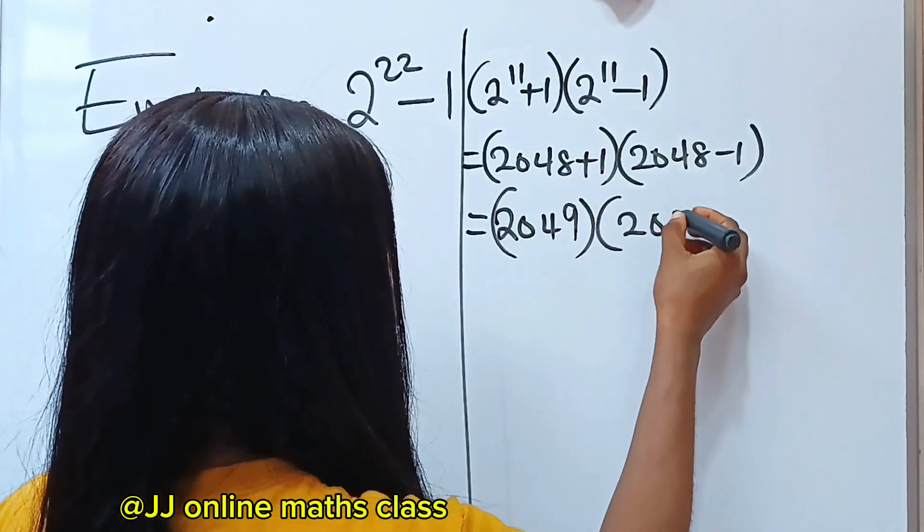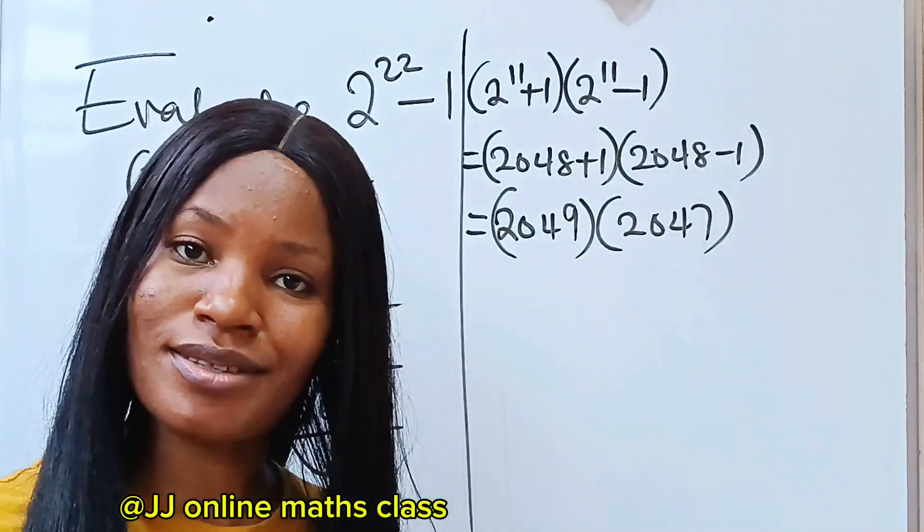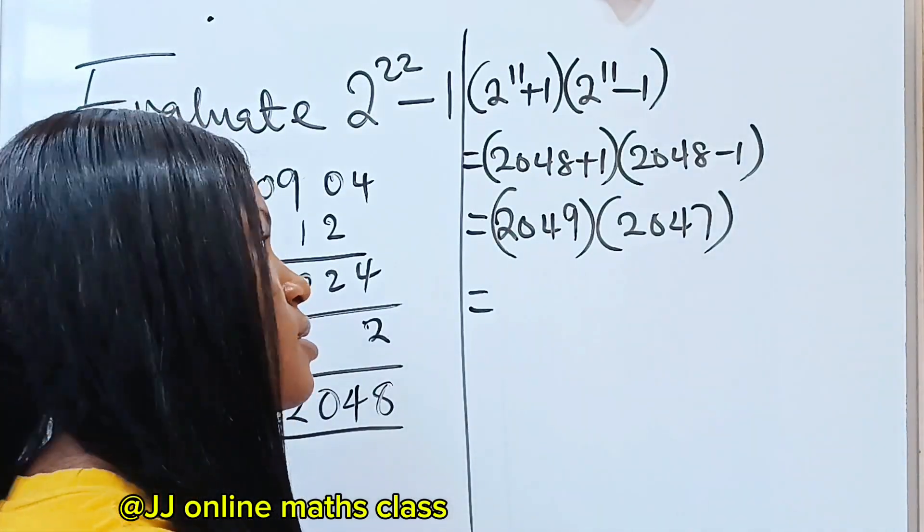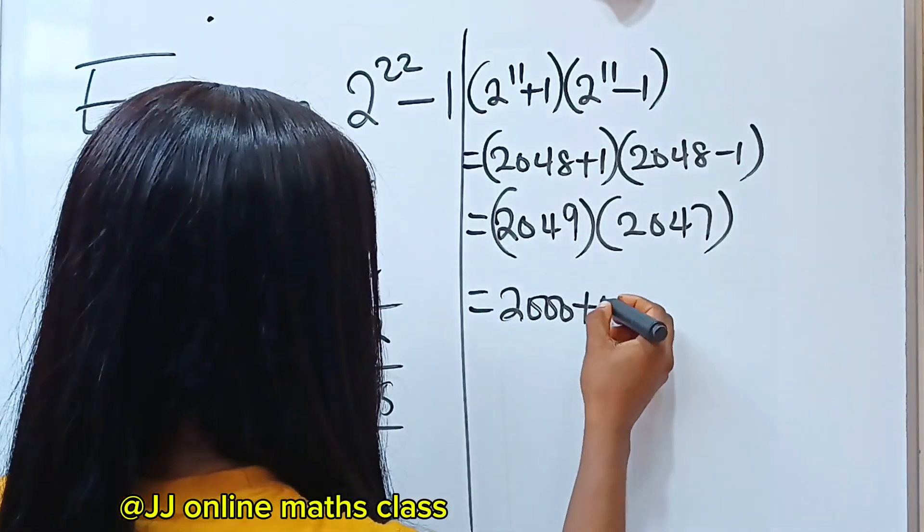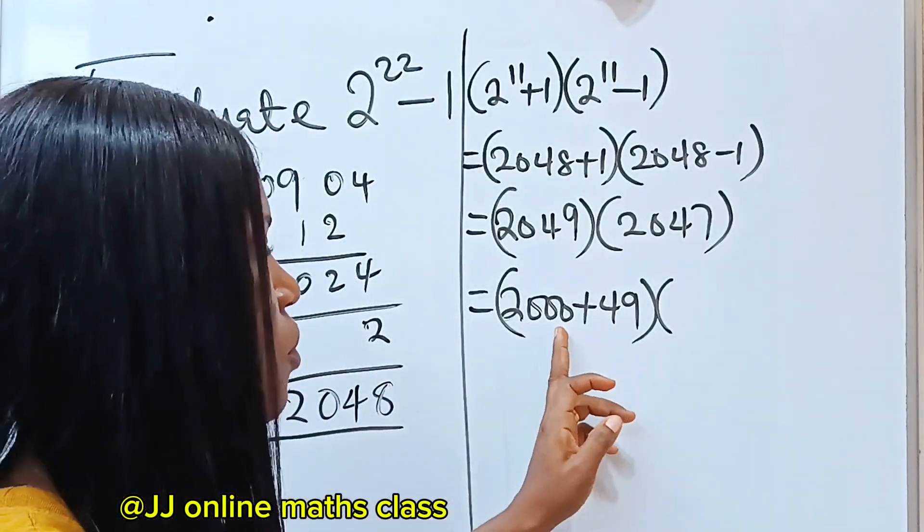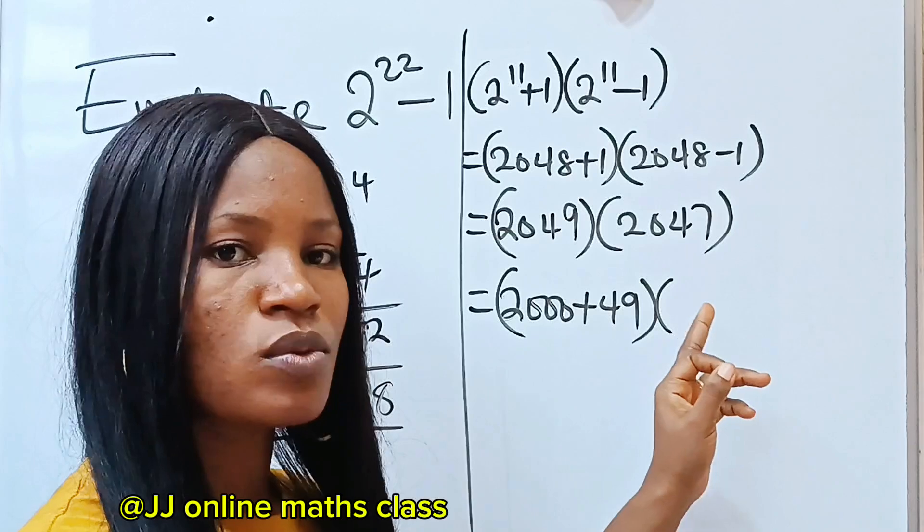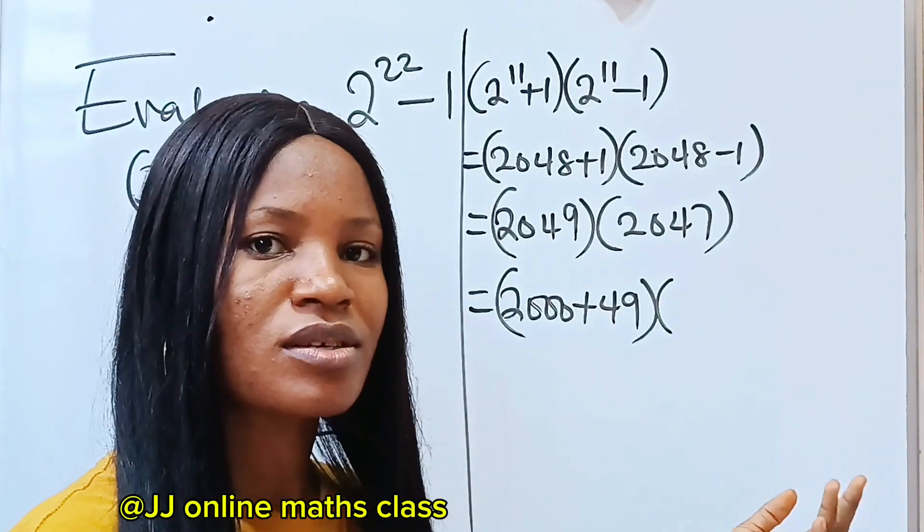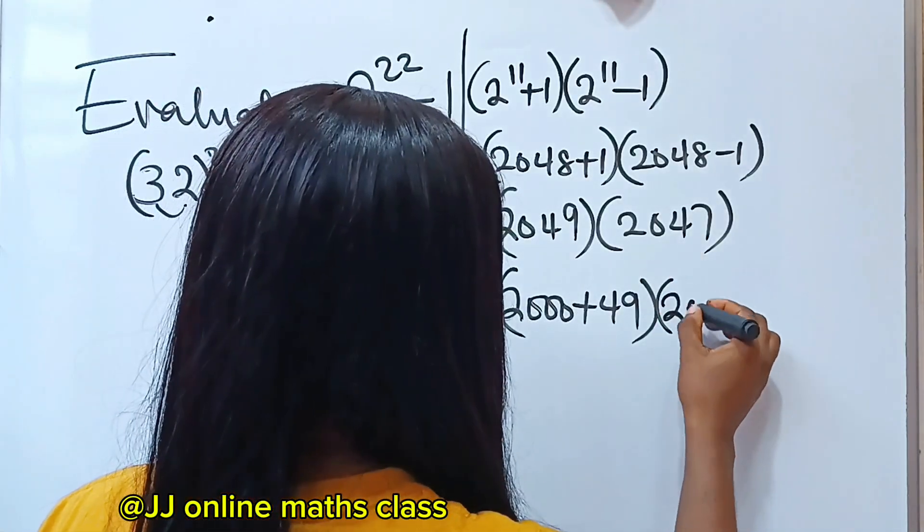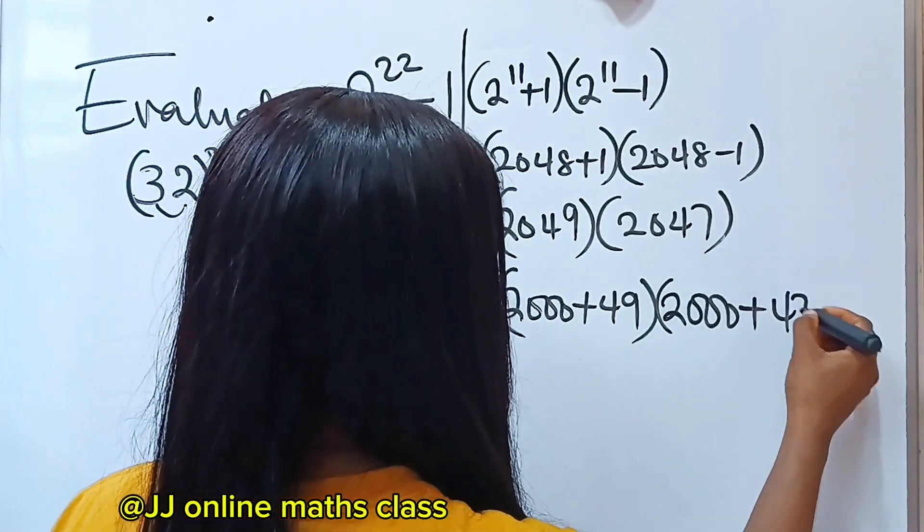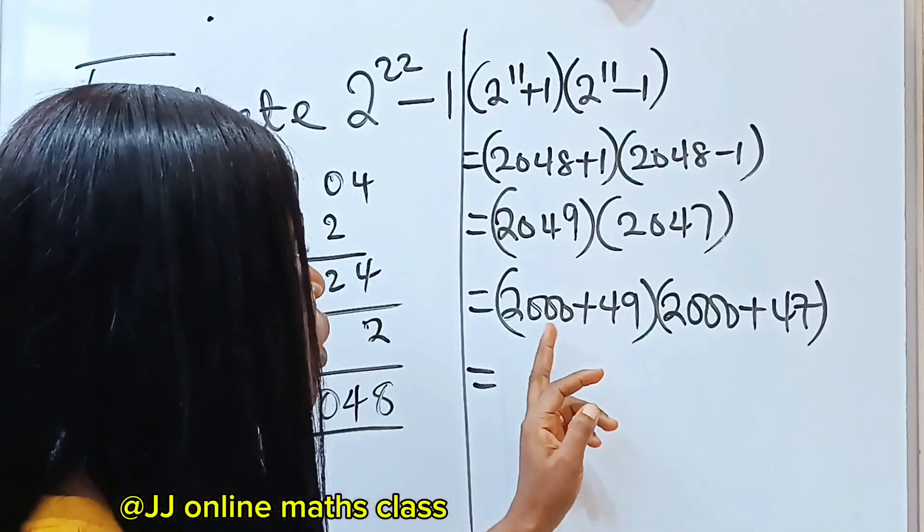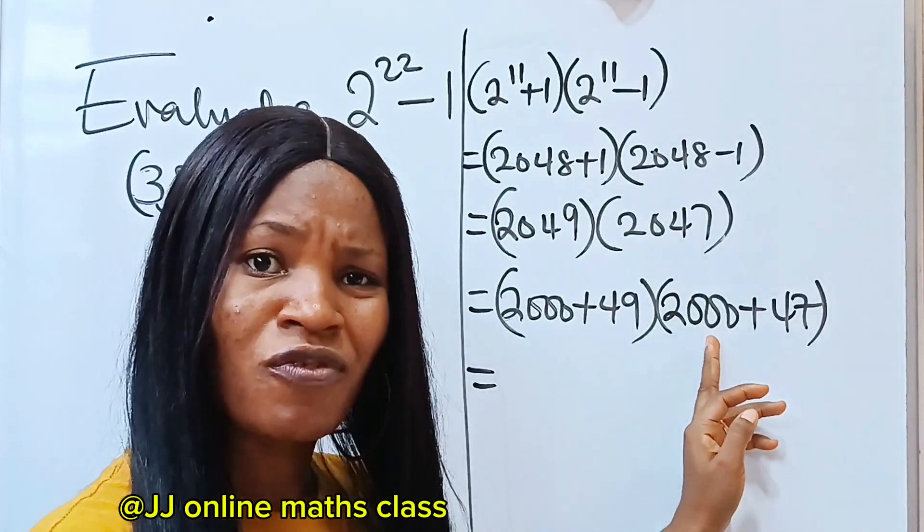How do you go about this? This is another tactical part of it. But we can actually analyze this. This can be written as 2000 plus 49. Why am I breaking it down like this? It's easier to multiply when you have zeros than when you have numbers in this way. So let's put them in the nearest thousand. This 2047 to the nearest thousand is 2000. Then let's bring out the remainder which is 47. So we go ahead and solve.